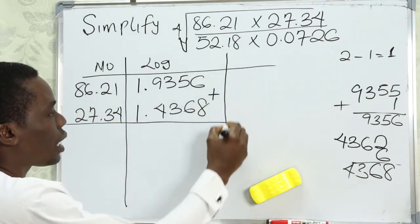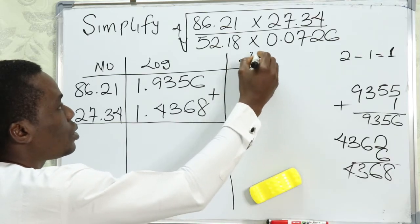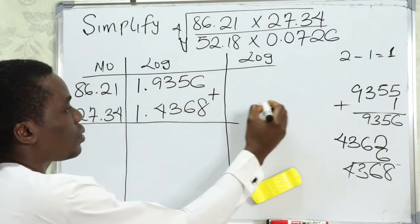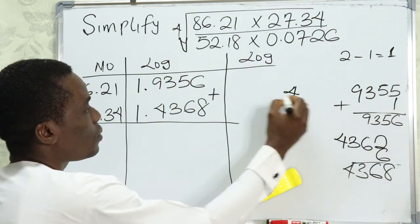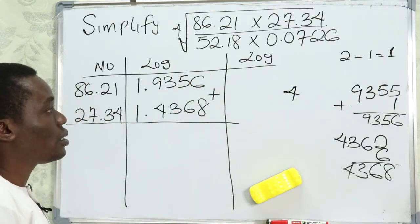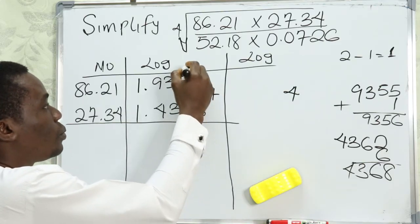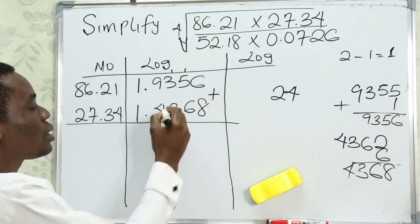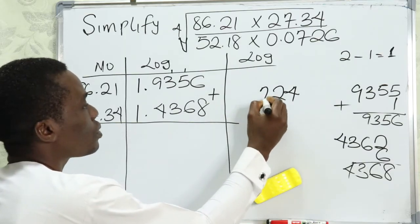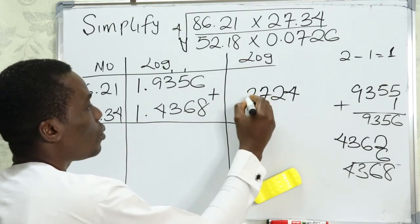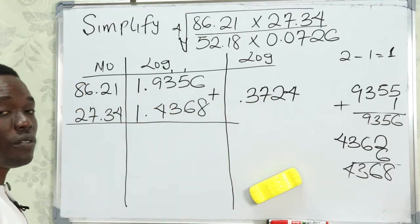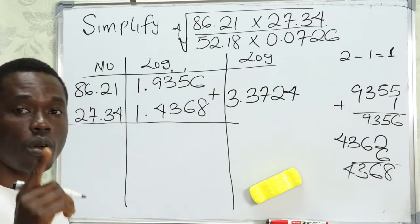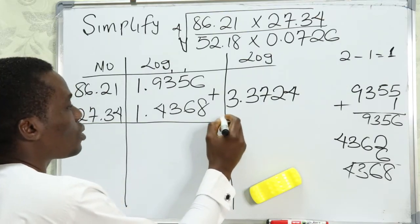Since both numbers in the numerator are multiplied together, we add their logs. Adding 1.9356 and 1.4368: 6 plus 8 is 14, carry 1; 5 plus 6 is 12, carry 1; 3 plus 3 plus 1 is 7; 9 plus 4 is 13, write 3, carry 1; 2 plus 2 gives us 3. So the result is 3.3724.